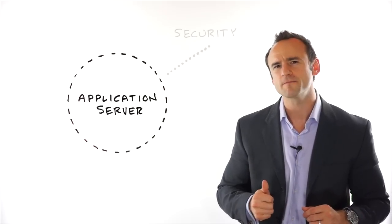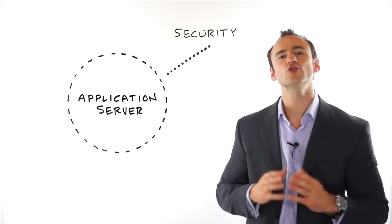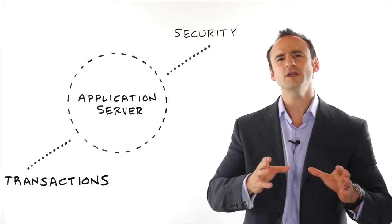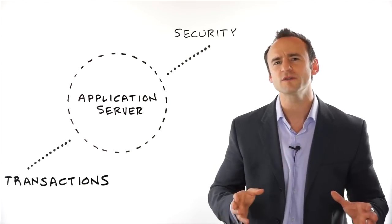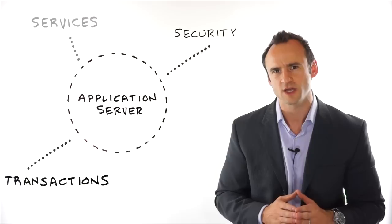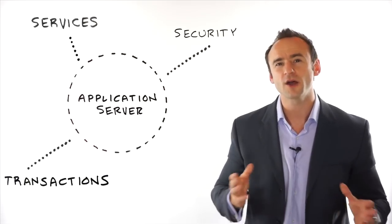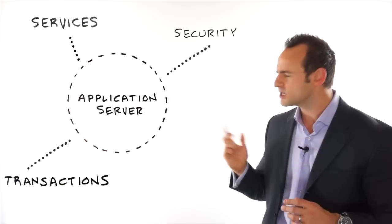The application server has a common set of services, just like Jim's buildings in his community did. We have things like security, a consistent way to handle transactions within our applications. We have the ability to connect to web services and other network services to make sure that our applications can communicate with the web and other systems.